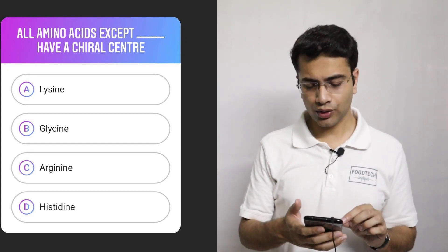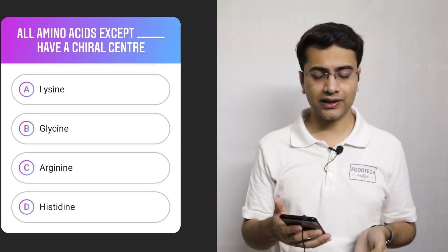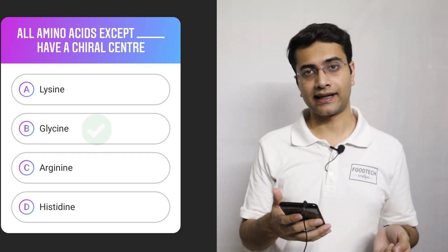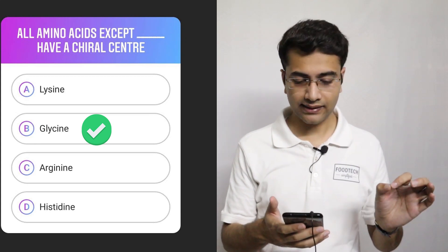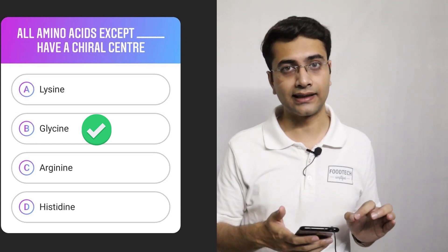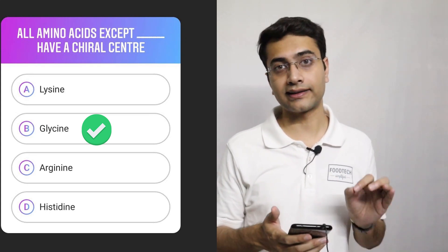So this specific question is a theoretical question. And glycine is the correct answer. So all amino acids have a chiral center except glycine. Glycine does not have a chiral center.